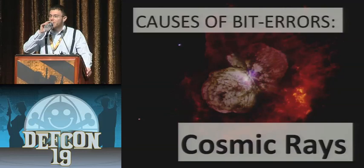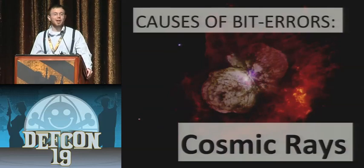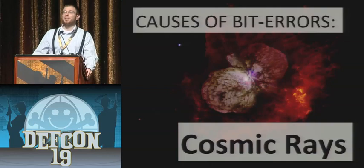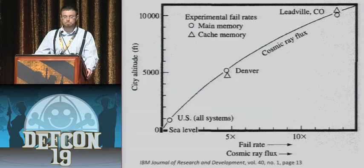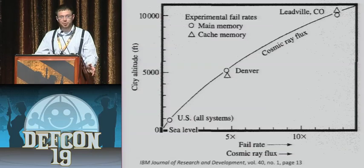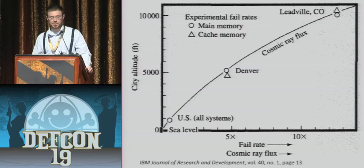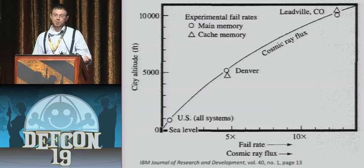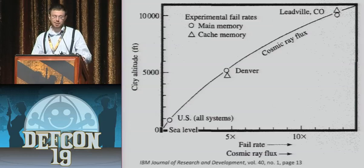Yes, I'm serious — and I specifically mean the intergalactic kind, not the solar kind. From all the research I've been able to do, the solar kind are generally not energetic enough to penetrate the upper atmosphere, but the intergalactic ones certainly are. There are some studies indicating that cosmic rays are actually the number one source of bit errors at ground level. This graph, taken directly from the IBM Journal of Research and Development, volume 40, number 1, page 13, plots altitude versus cosmic ray flux. The circles and triangles are actual experimentally observed errors in cache and main memory — and if you notice, they align exactly with the prediction for the cosmic ray flux.